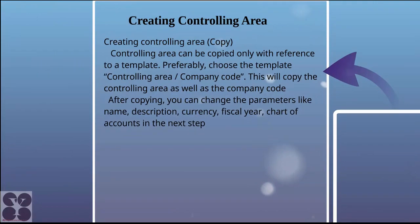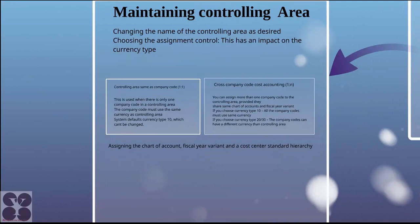When creating a controlling area, as suggested, it is advisable to copy it. A controlling area can only be copied with reference to a template — SAP made this mandatory. Preferably copy the template controlling area along with company code. This will copy the controlling area as well as the company code. After copying, you can change parameters like name, description, currency, fiscal year, and chart of accounts.